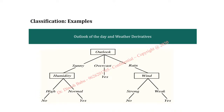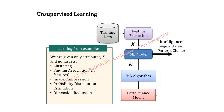Then we have decision tree. A decision tree is used when for a particular problem we can arrive at N number of solutions, and we need to identify which is the best solution. These are all the different algorithms under supervised learning. Supervised learning requires a target variable — whenever we have dependent and independent variables, we go for supervised learning.